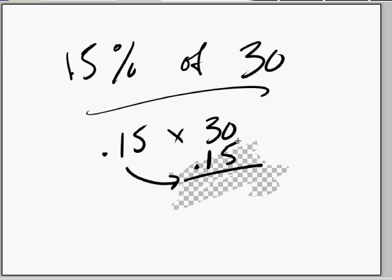And just multiply it out. So, 5 times 0 is 0. 5 times 3 is 15. 1 times 0 is 0. And 1 times 3 is 3. Bring down our 0's. 5, 4.